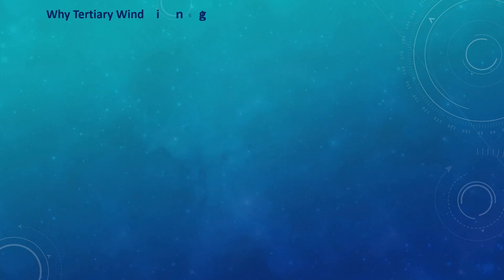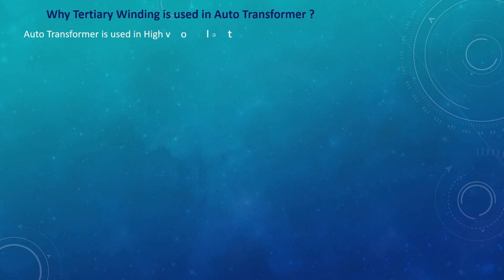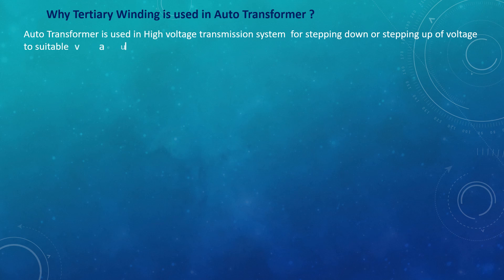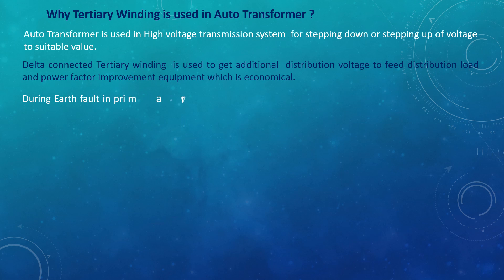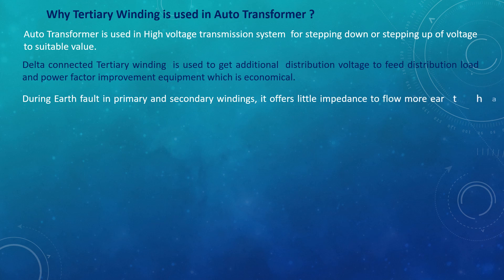Why is tertiary winding used in an auto transformer? An auto transformer is used in high-voltage transmission systems for stepping down or stepping up the voltage to a suitable value. A delta-connected tertiary winding is used to get additional distribution voltage to feed distribution load and power factor improvement equipment, which is economical. During earth fault in primary and secondary windings, it offers little impedance to allow more earth fault current to flow for operation of the protective relay.